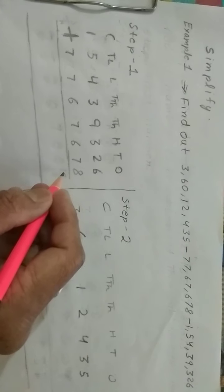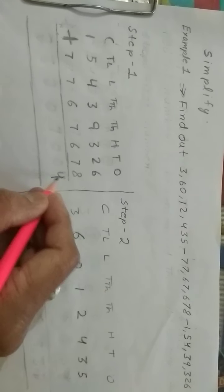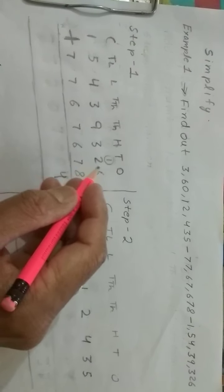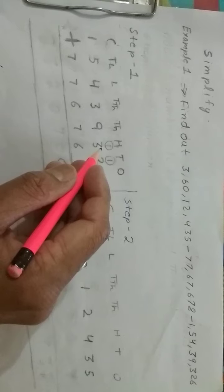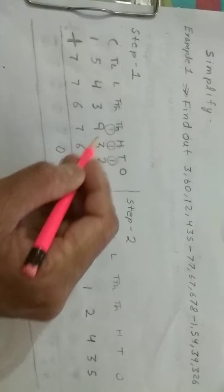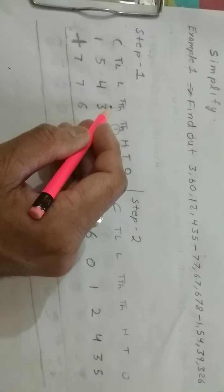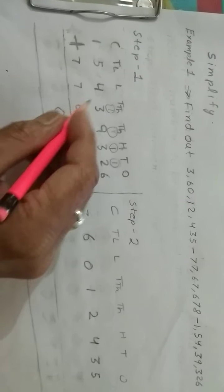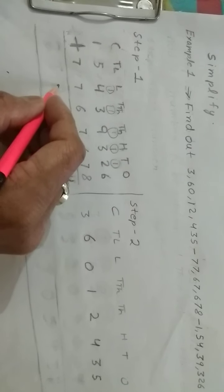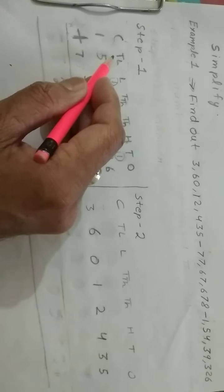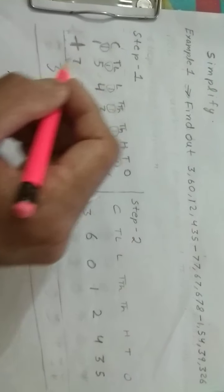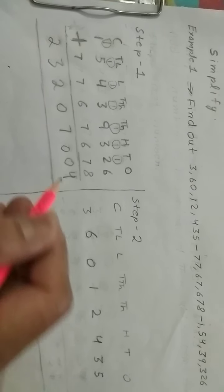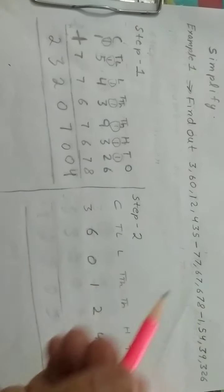Now let's start adding. First step: 6 plus 8 is 14, write 4, carry 1. 7 plus 8 plus 9 plus 1 is 10, write 0, carry 1. 6 plus 3 plus 9 plus 1 is 10, write 0, carry 1. 9 plus 1 plus 10 plus 7 is 17, write 7, carry 1. 6 plus 3 plus 9 plus 1 is 10, write 0, carry 1. 7 plus 1 is 8. Then 8 plus 4 is 12, write 3 here, carry 1; 1 plus 1 is 2. So our sum is 2 crore 32,07,004.